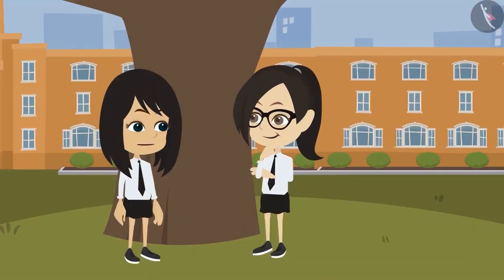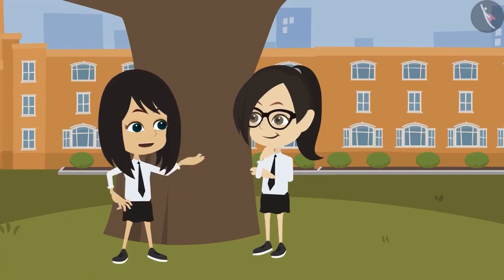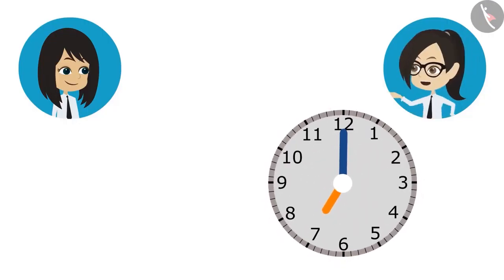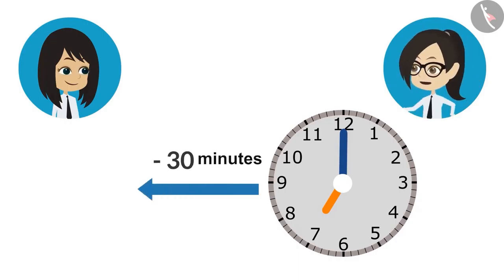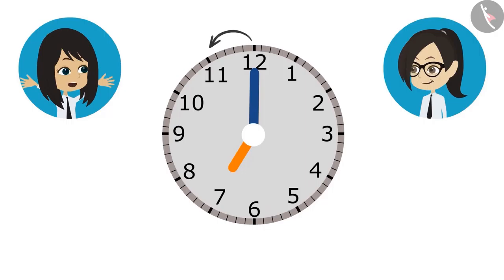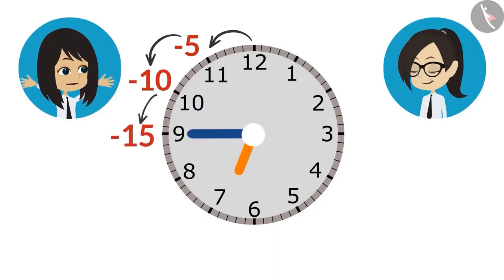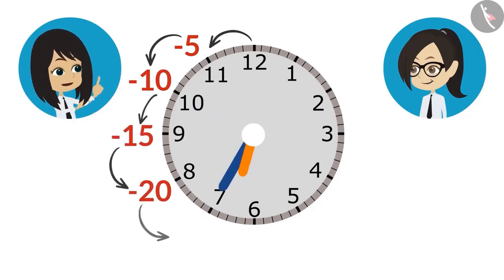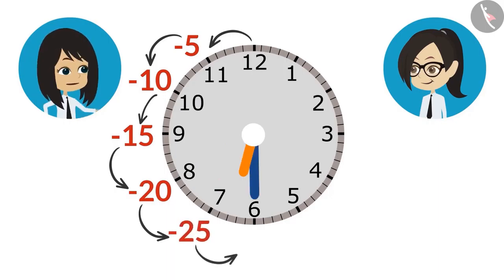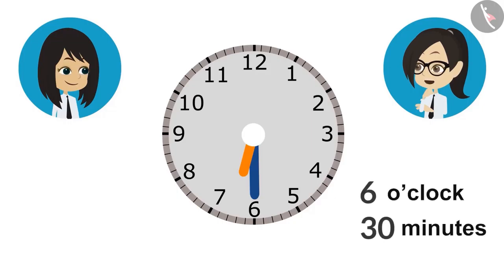Now tell me, to come to the amusement park tomorrow, we have to reach school at 7 o'clock in the morning. And if we take 30 minutes from home to reach school, then what time do we have to leave from home? For this, first we will draw 7 o'clock in the clock. After that, we will reduce the time it will take to travel from home to school. To subtract 30 minutes, from 12 to 11 reduces 5 minutes. When it comes to 10, then 10 minutes. 15 at 9, 20 at 8, 25 at 7, and 30 minutes when it reaches 6. This means tomorrow we have to leave home at 30 minutes past 6 o'clock.